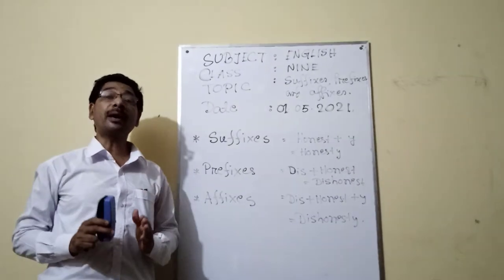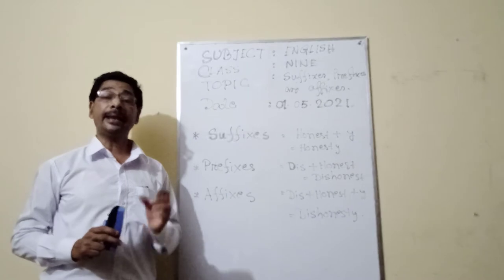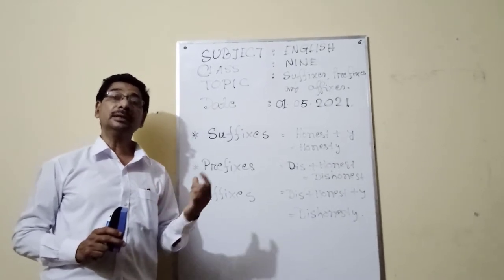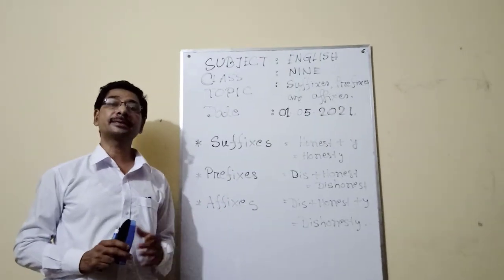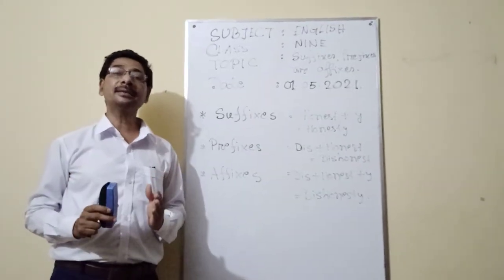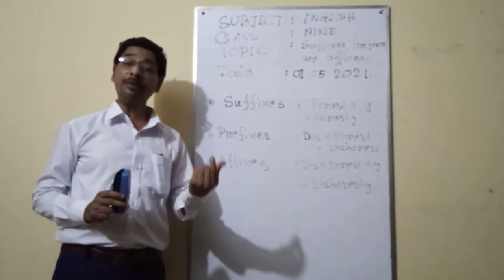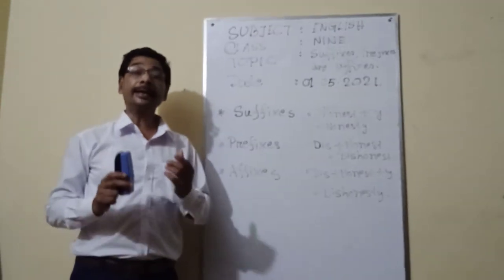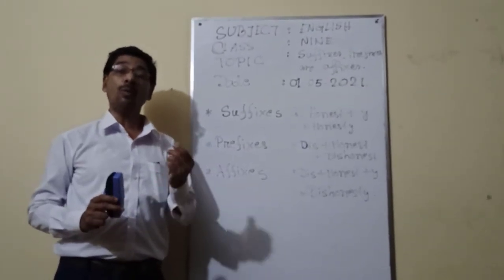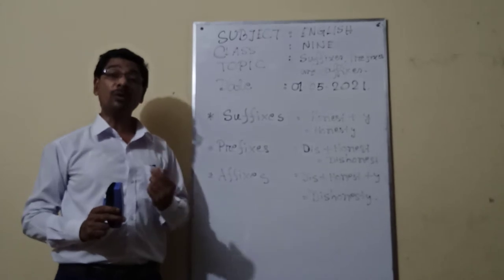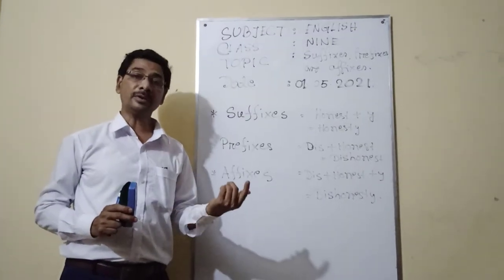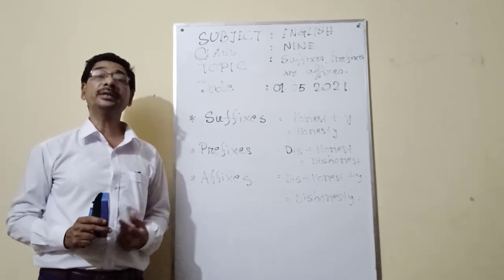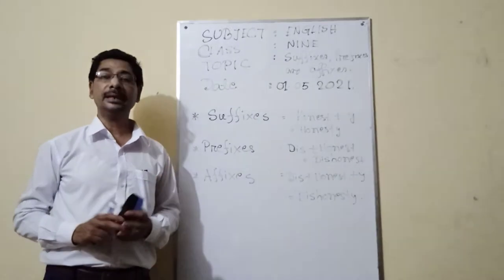A word part is called a syllable. If you add a syllable after the main word, it is called a suffix. If you add syllables before the main word, it is called a prefix. And if you add syllables on both sides — one syllable before and one syllable after the main word — it is called an affix.